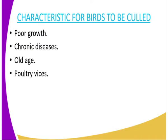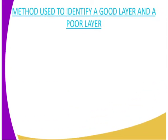Poultry vices are also a reason for culling — poultry that normally feed on eggs, egg eaters, and cannibals are supposed to be culled out. We also have the poor layer. A poor layer only allows one finger in between the pelvic bones, while a good layer should allow two to three fingers.